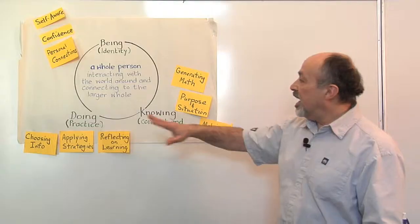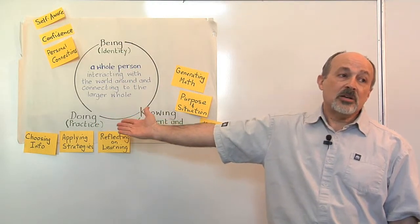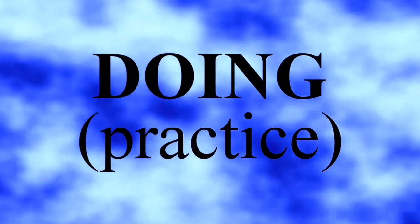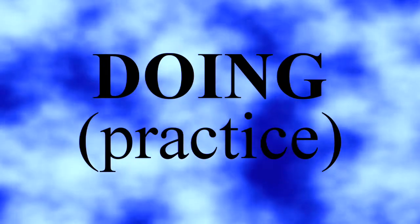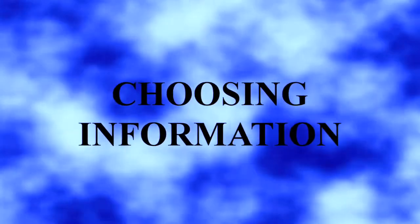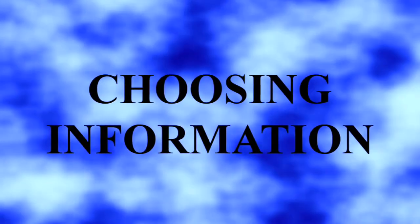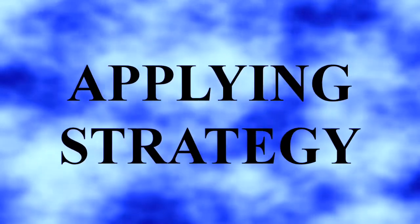That's being. The next aspect is called doing. It's the actual practice, and when we do mathematics, it's more than just doing it. There are various stages. The first stage is usually looking at describing what the issue is, what the problem is, and choosing relevant information. And then we look further and we have to apply a strategy. How are we going to do this problem?